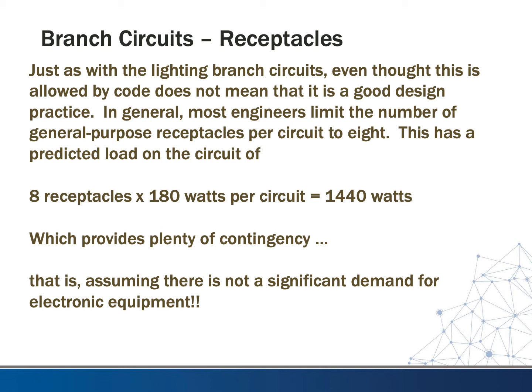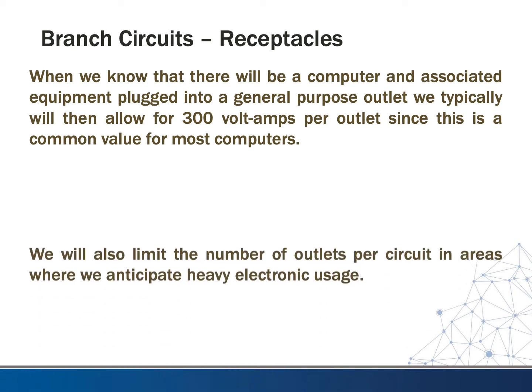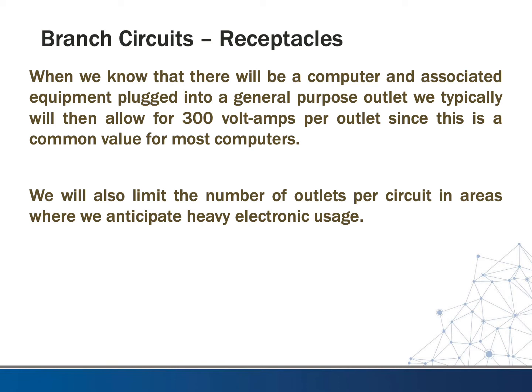If you're in a place with heavy electronics, you might want to modify this. For example, if we have a lot of offices in a row, we might put one circuit per office — usually four outlets — so it's four per circuit. When we know that there will be a computer and associated equipment plugged in, we typically allow at least 300 watts per outlet, since most power supplies on desktop computers are around 300 watts. We also limit outlets per circuit in areas with heavy electronic usage.